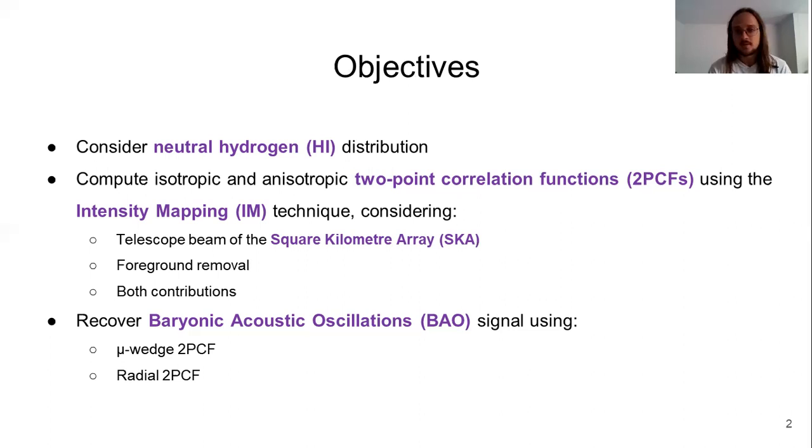Now that I have clarified those concepts, I will explain the main idea of this project. We used cosmological simulations in order to simulate an SKA Neutral Hydrogen Intensity Mapping Observation, in which we have taken into account the effect of the telescope beam, which introduces an angular smoothing in the cosmological signal, and also the foreground removal.